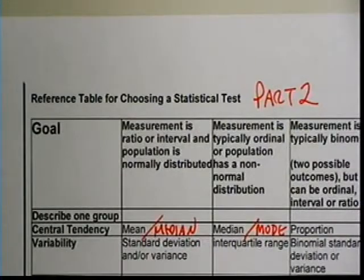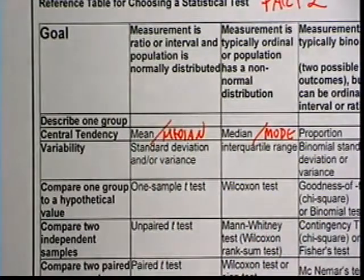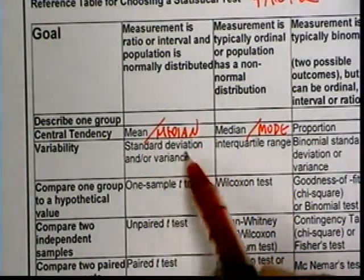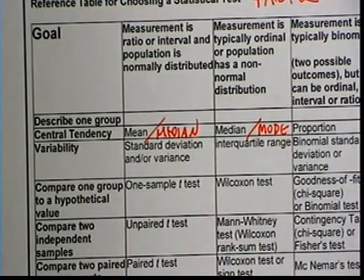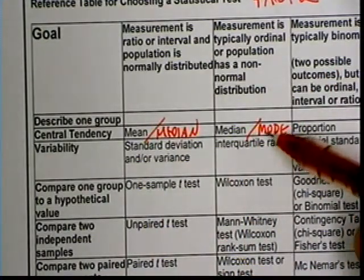Welcome back. This is the second part of the statistical test table video. I want to give you a little introductory information before we get back to the previously recorded material. The mean and median can be used to describe interval data and ratio data — if it's normally distributed, the mean, median, and mode will all be the same. If it's ordinal data, you may want to use the mode in addition to the median.